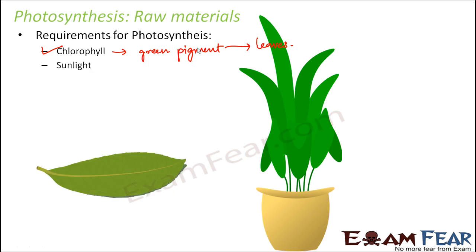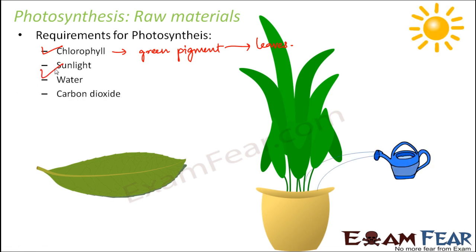Sunlight — without sunlight, plants cannot perform photosynthesis. Third is water. And fourth is carbon dioxide. So these are the four important raw materials for photosynthesis to take place.